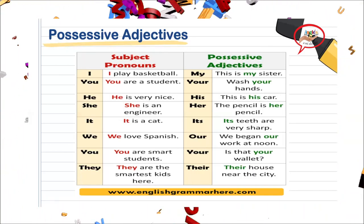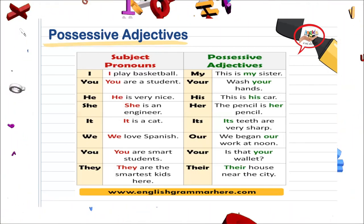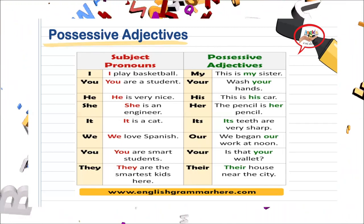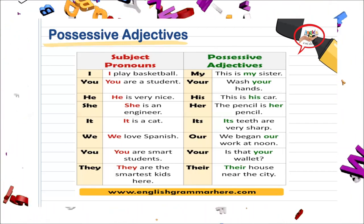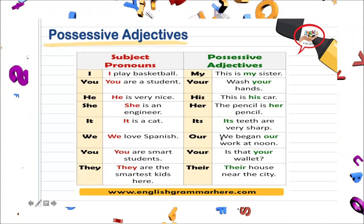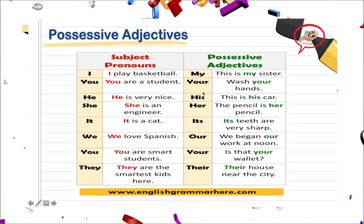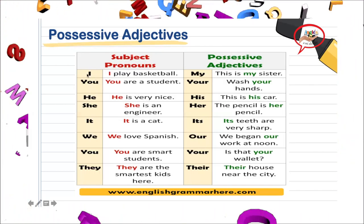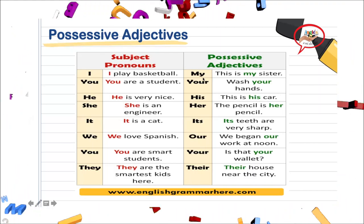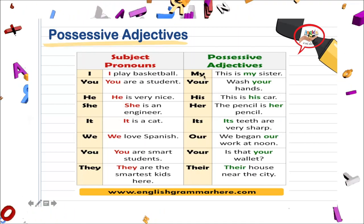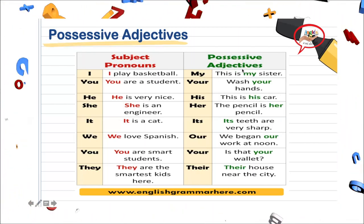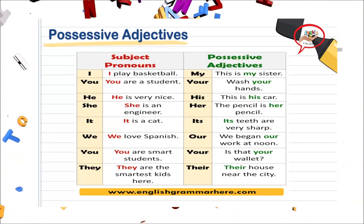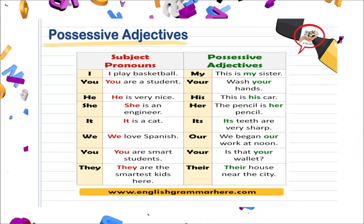Ahora, vamos con lo que nos concierne en esta clase, que son nuestros possessive adjectives. Los possessive adjectives tienen la finalidad de describir un noun, o sea, un nombre. Siempre lo vamos a encontrar antes de la palabra que nosotros queramos describir. Para poderla saber, tenemos que saber nuestro subject pronoun. Por ejemplo, cuando yo tengo en mi oración I, yo lo puedo intercambiar por mi possessive adjective, que va a ser my. Estos possessive adjectives nos van a decir posesión — esto es mío, esto es tuyo.